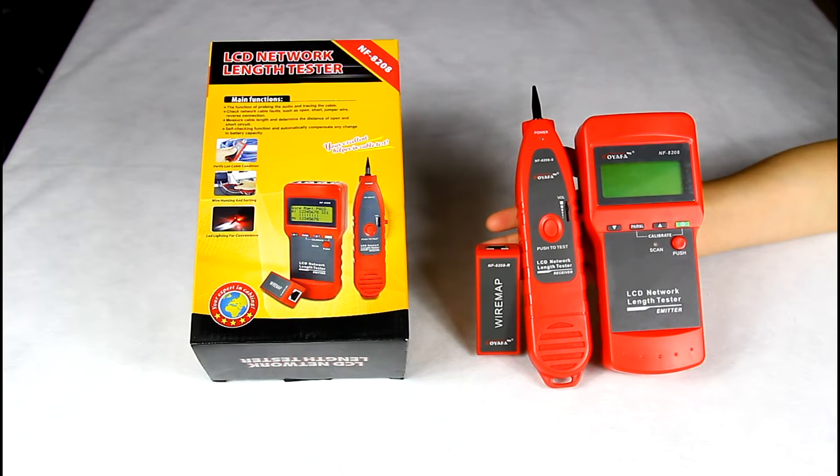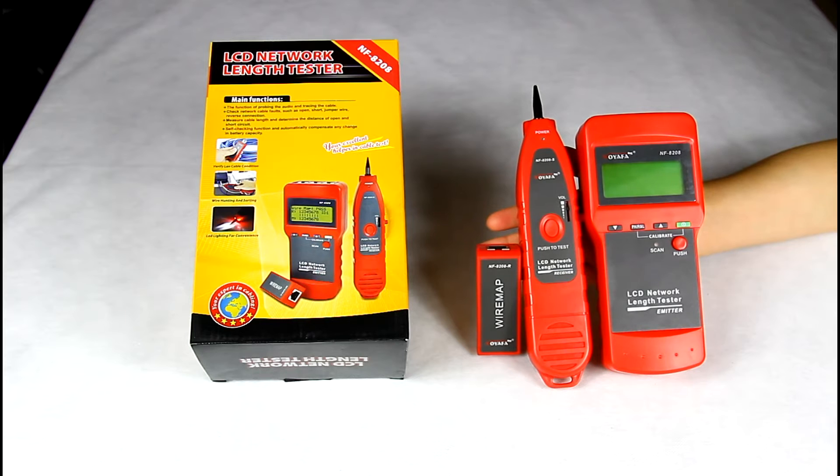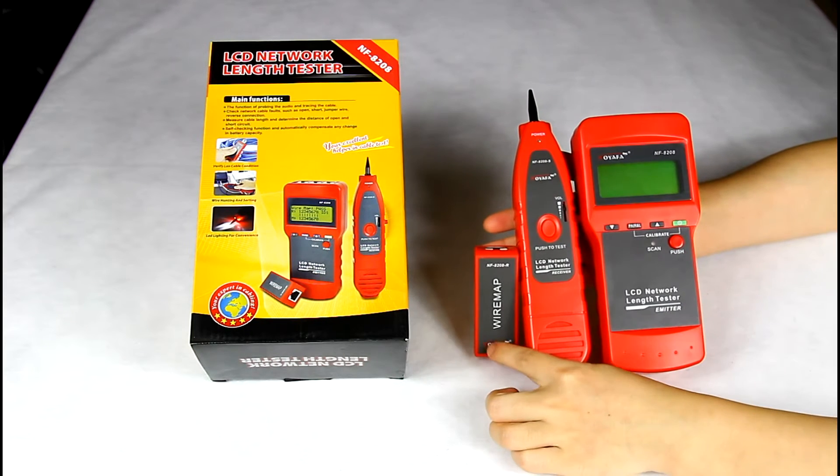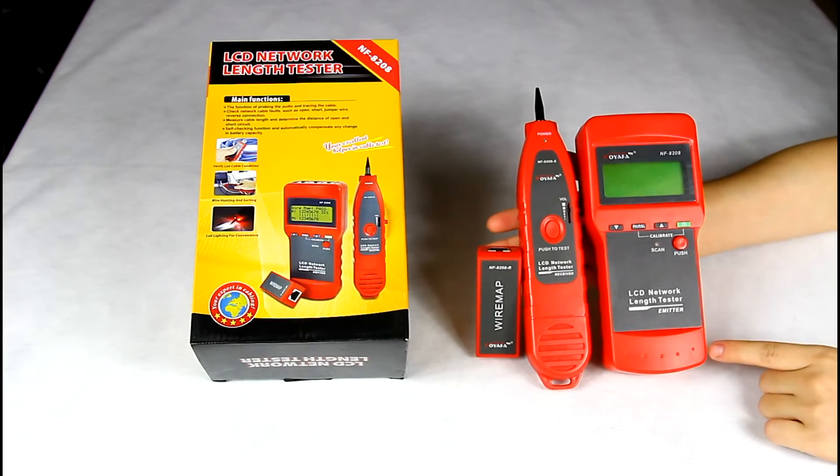Hello, today I will introduce our network lens tester NF8208 to you. Firstly, this device includes three parts: the remote, receiver, and emitter.